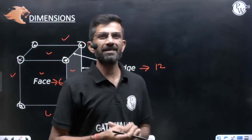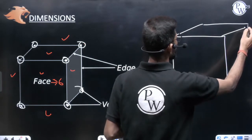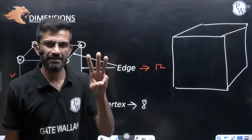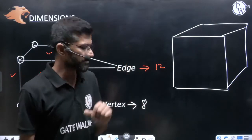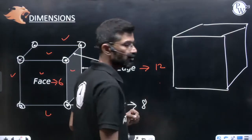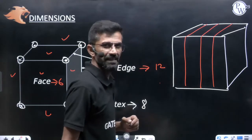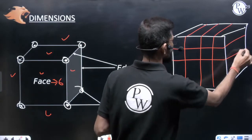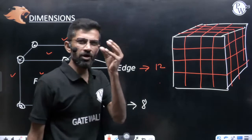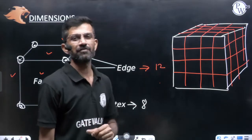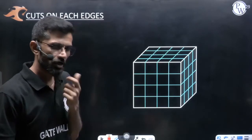Now let us understand a cube. I am drawing one cube. In this cube, I am giving 3 cuts on each edge to form smaller cubes of equal size. If I give 1 cut, 2 cuts, 3 cuts on one edge, and similarly on the other two edges, how many smaller cubes will be formed? Each layer has 4×4 = 16 cubes, and with 4 layers total, we get 16×4 = 64 smaller cubes.